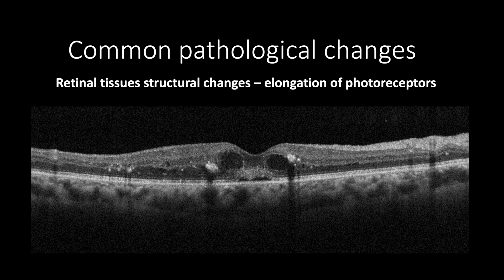This is a case of diabetic macular edema showing increased retinal thickening with intraretinal cystic changes and hyperreflective foci due to the accumulation of hard exudates that cast shadows. In contrast, small hyperreflective foci that usually don't cast a shadow may indicate an active inflammatory process due to activated microglia. This diabetic macular edema shows an accumulation of subretinal fluid and elongation of the photoreceptor layer, which appears as a brush borderline.